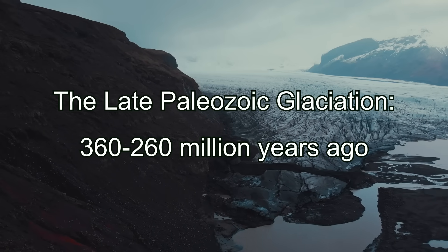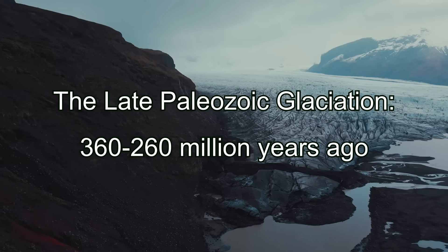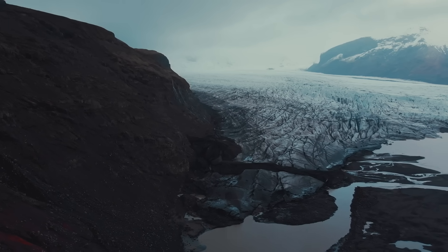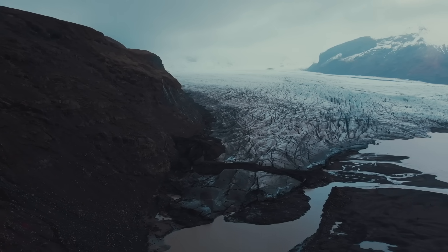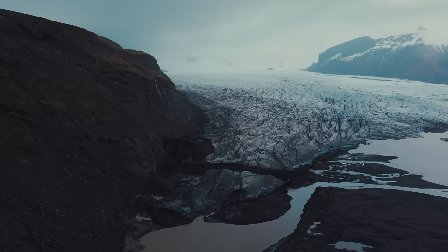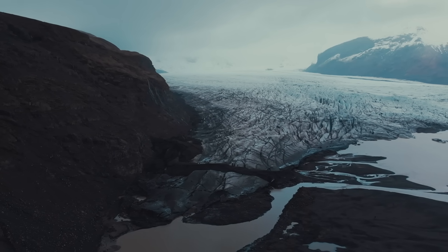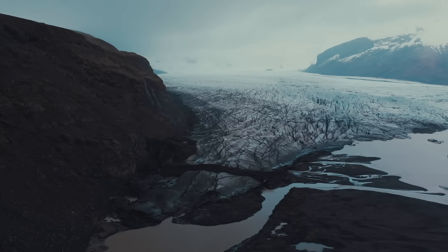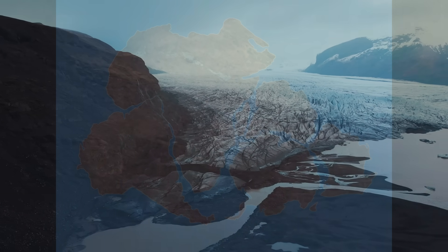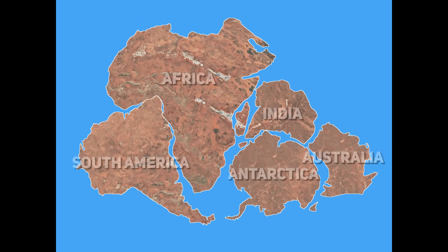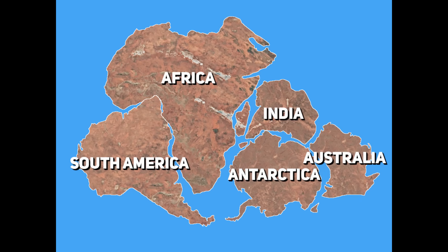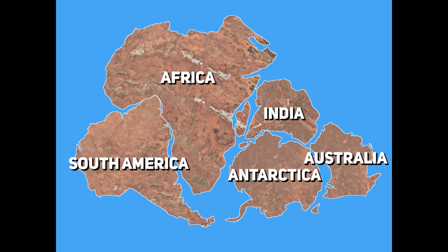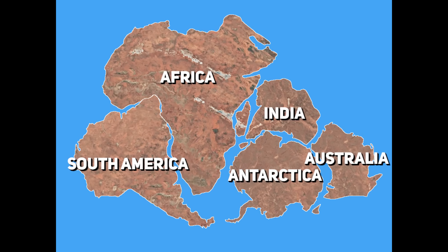One of the most significant glaciations in Australia's history occurred in the Late Paleozoic, during the Late Carboniferous and Permian periods, 300 to 260 million years ago. At this time, Australia was joined with Antarctica, Africa, India and South America as part of the southern supercontinent Gondwana, which drifted over the South Pole.